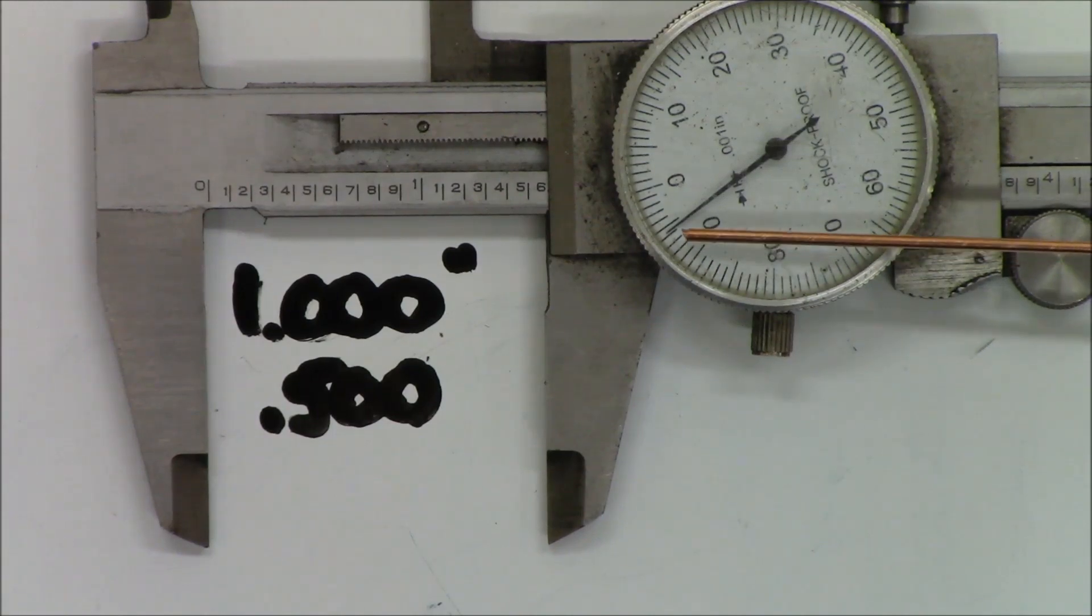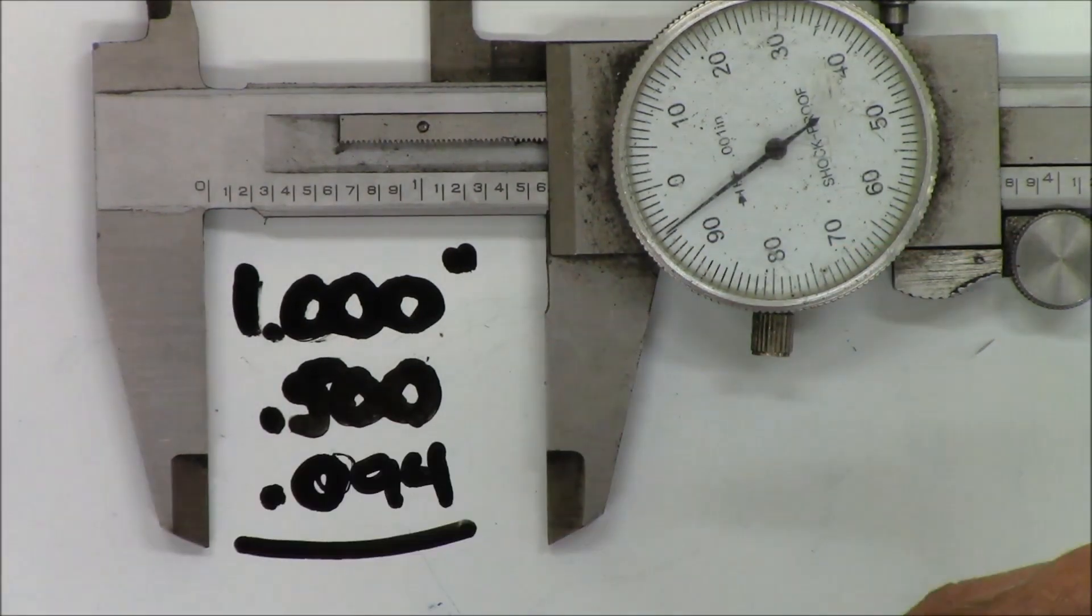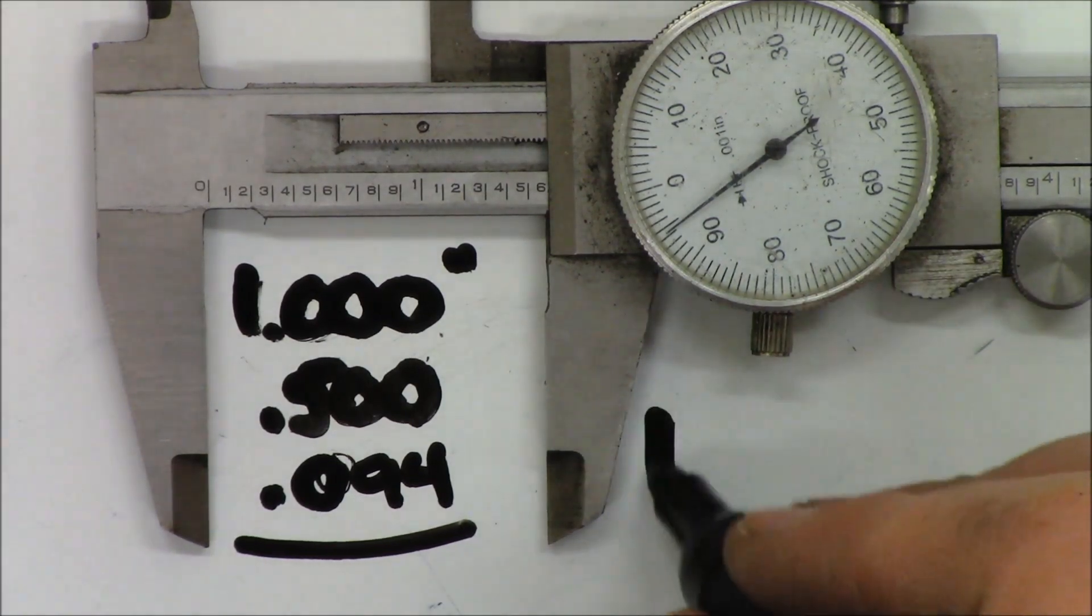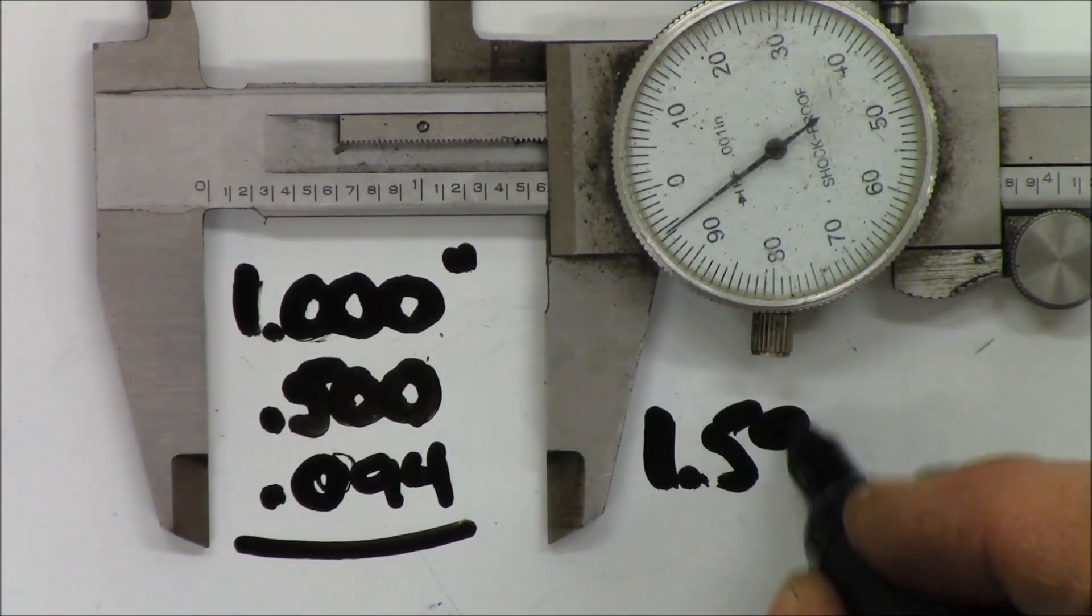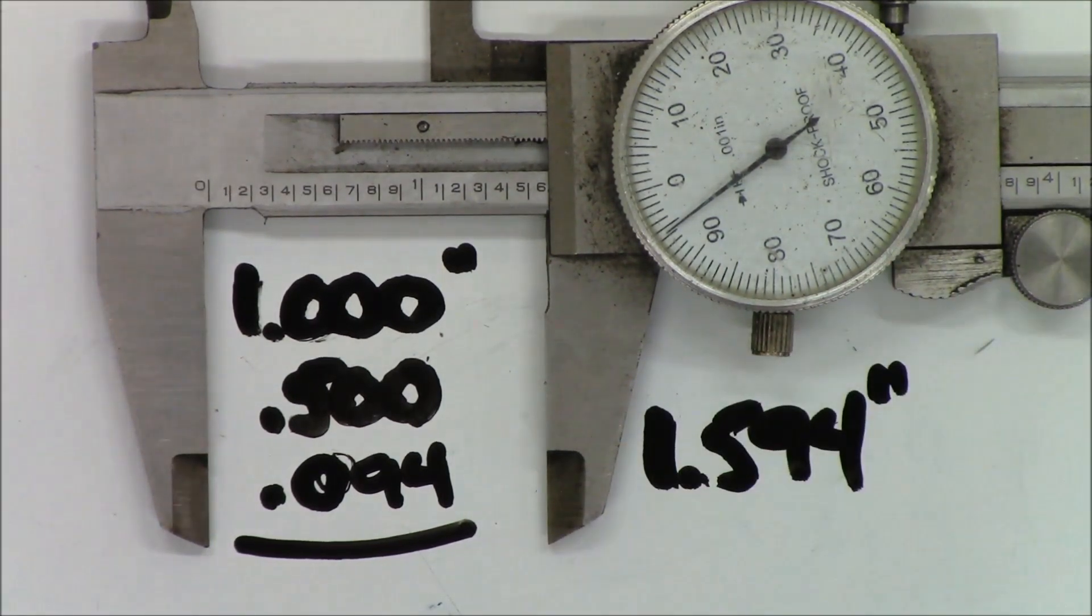How far past the 0.5 is on here? This will be your last two digits. It looks like we're at 90, 94. So I'm going to add 94 to this, add them up, and we get 1.594 inches. Easy.